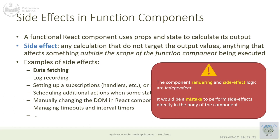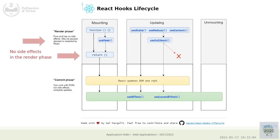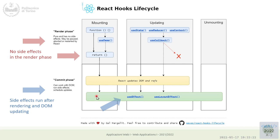It's a mistake to perform a side effect directly in the body of a component, because we have no control over how many times the component is called and rendered. It would be incorrect to call an API many times when only one call is expected. In the render phase we don't want side effects; all side effects should be in the commit phase. useEffect can run in the mount, update, and unmount phases, with different behavior for each.